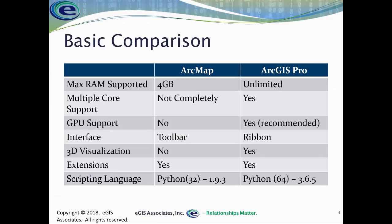What are the differences outside of the history we've talked about? ArcMap is limited by its COM architecture and 32-bit setup. One key limitation is the amount of RAM it can use — ArcMap can only use up to 4 gigabytes of RAM. So if you have more than that, ArcMap won't directly benefit from the extra RAM. Whereas ArcGIS Pro, being 64-bit .NET, has really no limit on the amount of RAM it can use — whether you have 8, 12, 16, or 32 gigabytes.